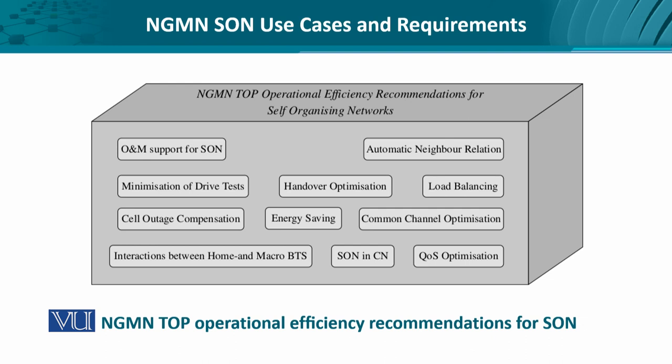Energy saving is a concern all the time, especially on the mobile or handheld device side where mains power is not available and devices are mostly battery operated. Common channels used for control signaling have to be optimized for a large number of users. Interactions between home and macro base transceivers like E Node B and home E Node B are also considered. SONs are also required for optimizing quality of service parameters, and this list can go on, but these were the top recommendations.